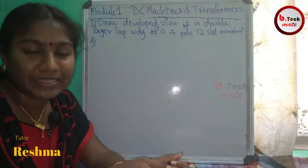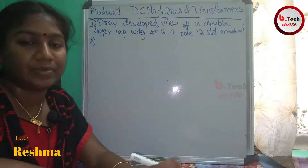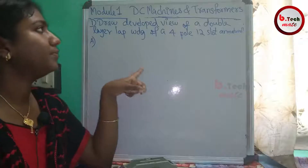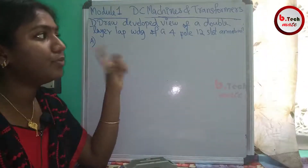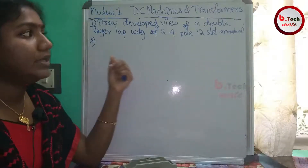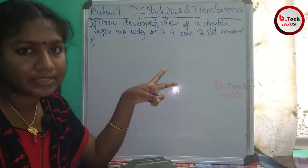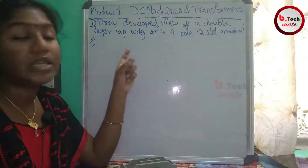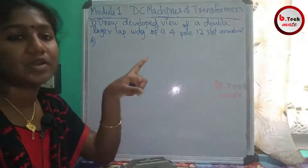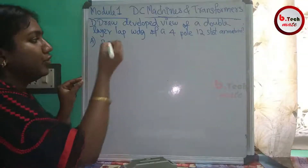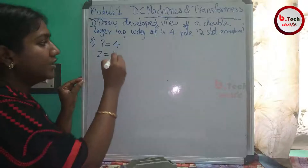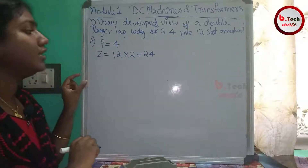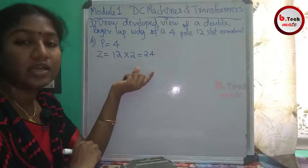Now we have a problem — a question from 2018. Part B: draw the developed view of a double layer lap winding of a four-pole, 12-slot armature. The concept of double layer means two coil sides per slot, giving two conductors per slot. Total conductors Z = 12 × 2 = 24 (simplex, double layer).